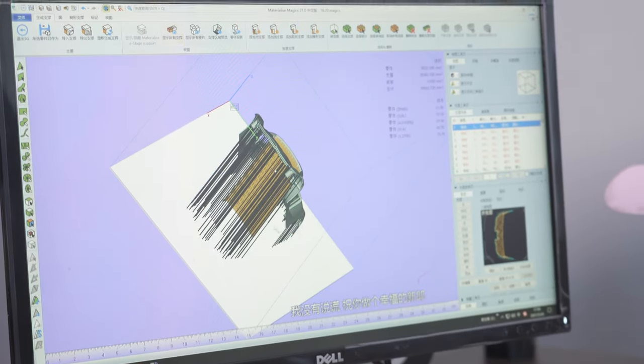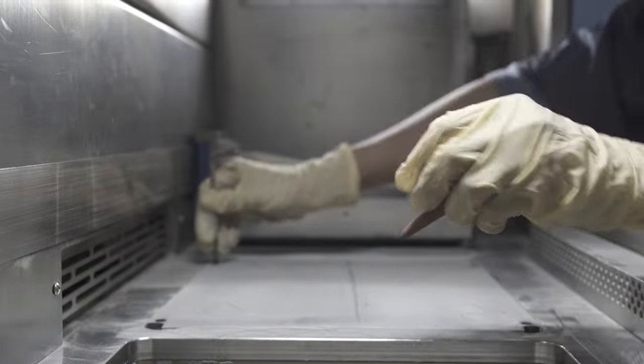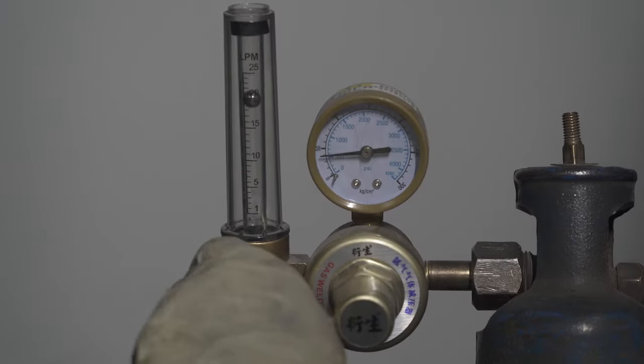First we'll need your 3D CAD file. The machine is then prepped and the printer selectively fuses fine metal powder particles together using a high power laser. Another layer is spread on top and the process is repeated until the final part is completed.